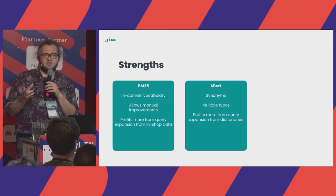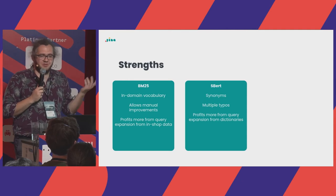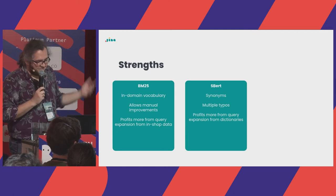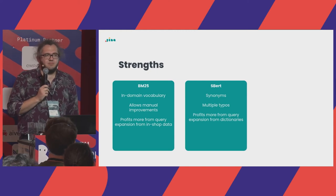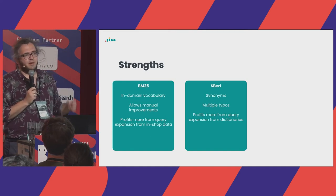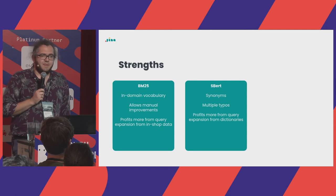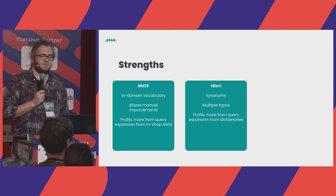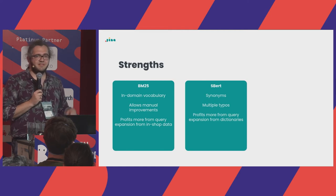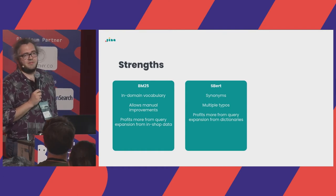We also looked at which model works best for individual query types. For BM25, in-domain vocabulary works really well — whatever is in the descriptions, you find it — and it allows manual overrides, which is harder with trained models. It also benefits greatly from query expansion using in-shop vocabulary. SBERT works well out of the box with synonyms and can outperform BM25 with multiple typos. SBERT profits much more from query expansion using language dictionaries unrelated to shop data.